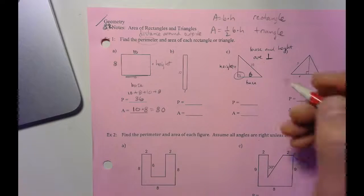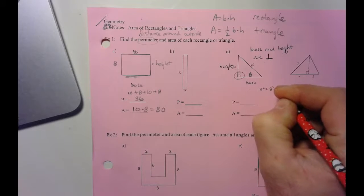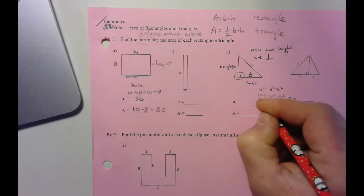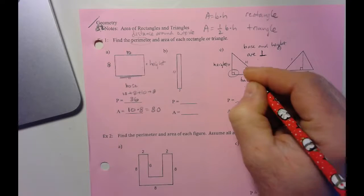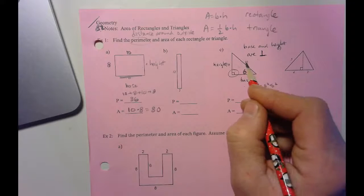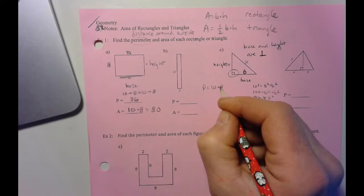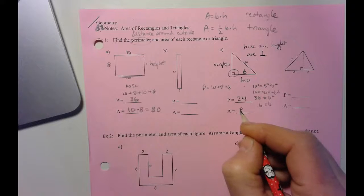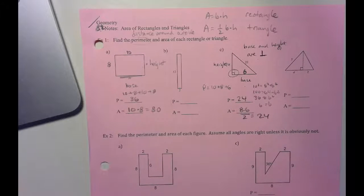And if it seems like magic where I got 6 from, then just do the Pythagorean theorem. Just do the 10 squared equals 8 squared plus b squared. And hopefully that'll make sense to you that, oh yeah, that's right. That's why b equals 6. That's my base there. And then I can do for the perimeter, I could add 10, 8, and 6 together. And that would give me 24. And then for the area, it would be 8 times 6 divided by 2, and that's also going to be 24. And this is a weird one where we have the same exact answer for both of those.